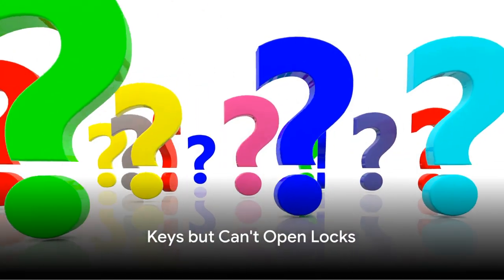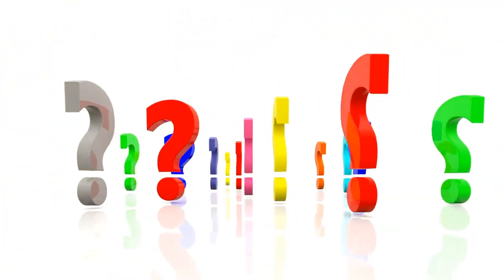Riddle number one: what has keys but can't open locks? The answer, a piano. Keys, music keys, but they can't open locks. Tricky, isn't it?